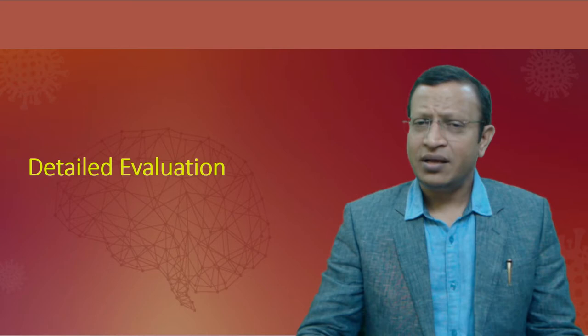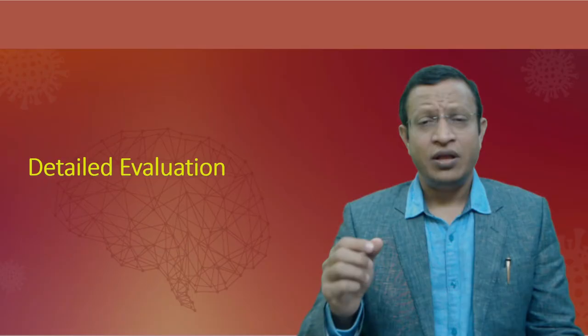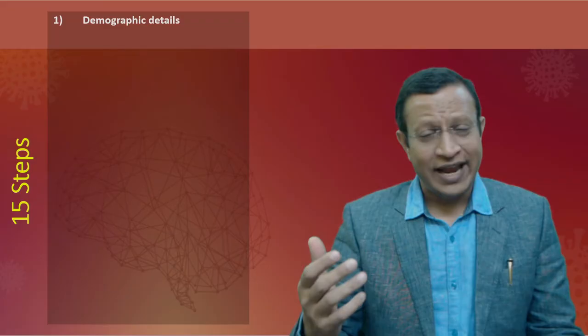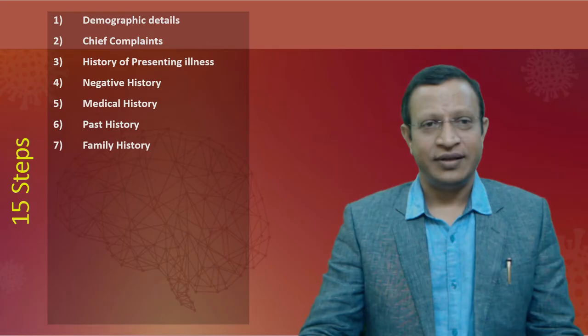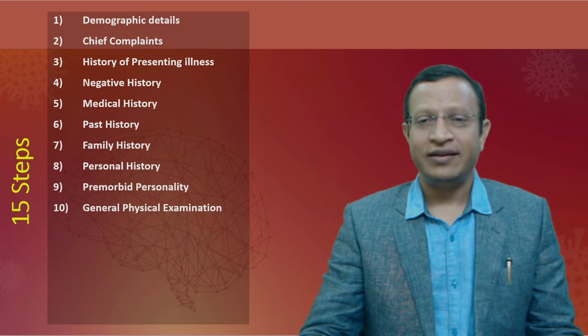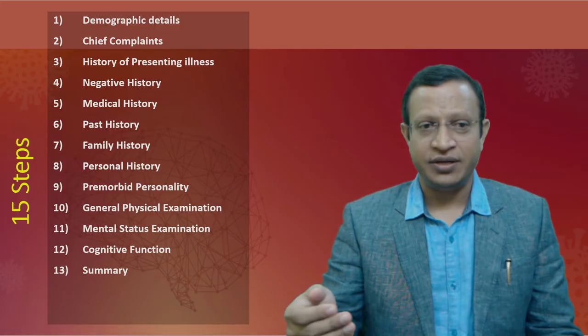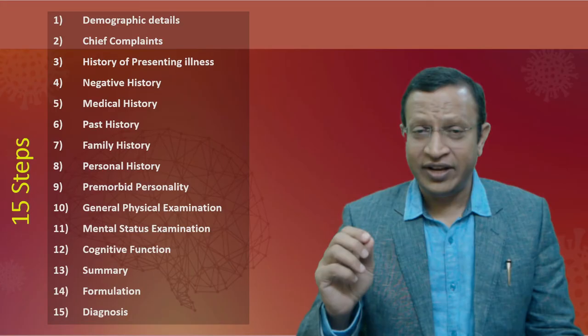Detailed evaluation has 15 steps. These are: demographic details (identification data), chief complaints, history of presenting illness, negative history, medical history, past history, family history, personal history, pre-morbid personality, general physical examination, mental status examination, cognitive function, summary, formulation, and diagnosis. These are the 15 different steps used in the assessment of psychiatry.